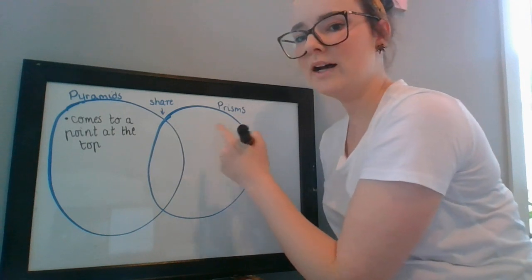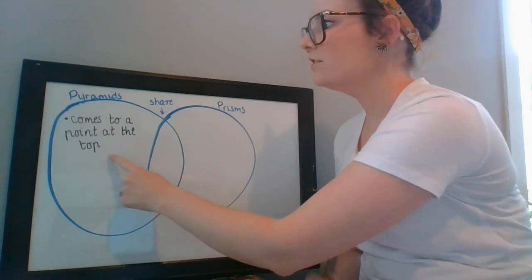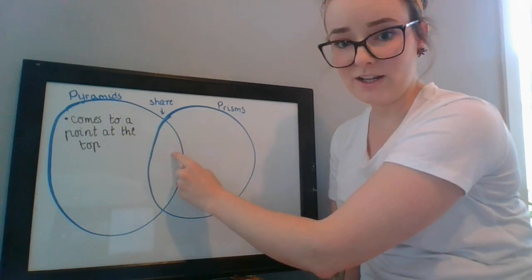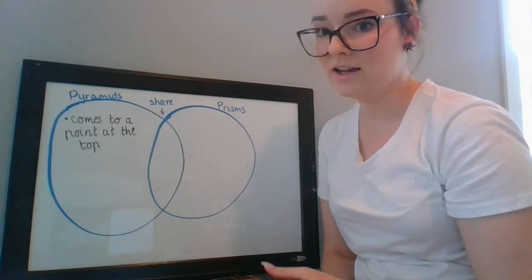Does a prism come to a point at the top? No. So I know that it goes underneath my pyramid information. They don't share that property, they don't share that information, so I have to pop it over there underneath my pyramids heading.